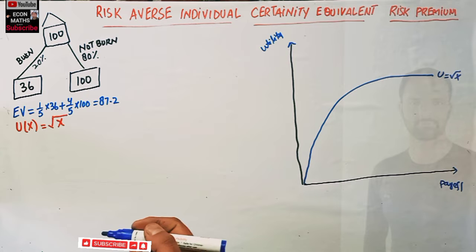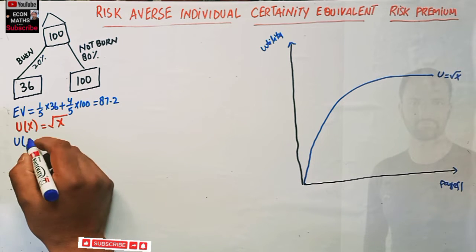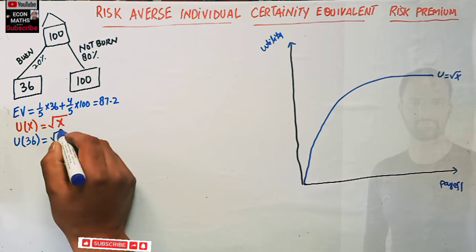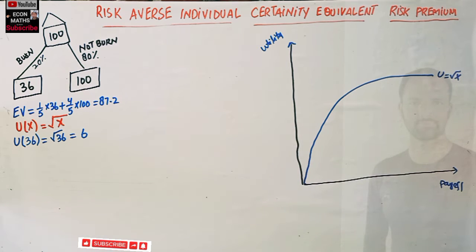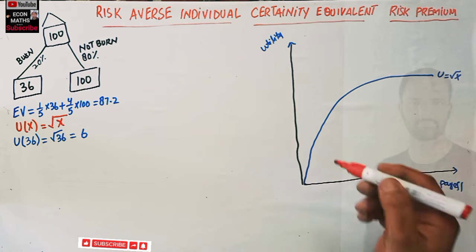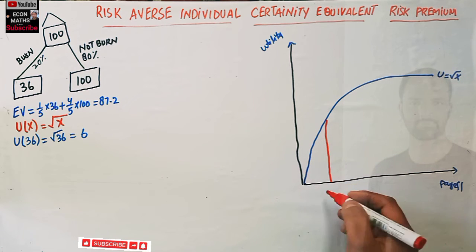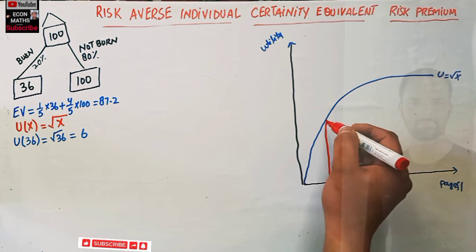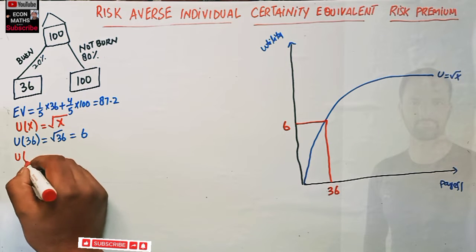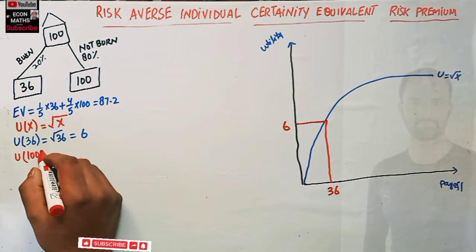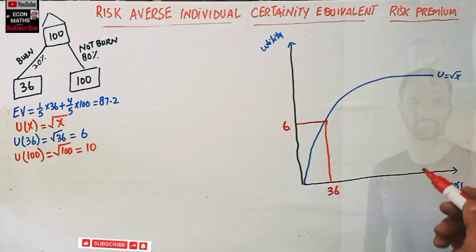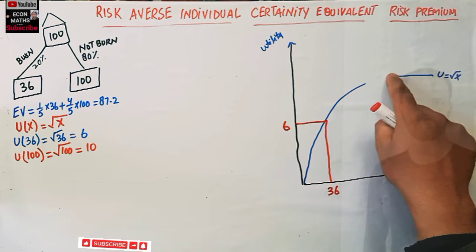Since U(x) = √x is our utility function, what is the utility of 36 dollars for this individual? Utility of 36 = √36 = 6. So at x = 36, utility comes out to be 6.